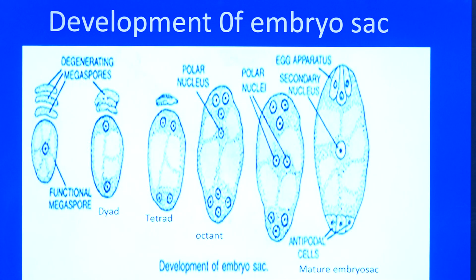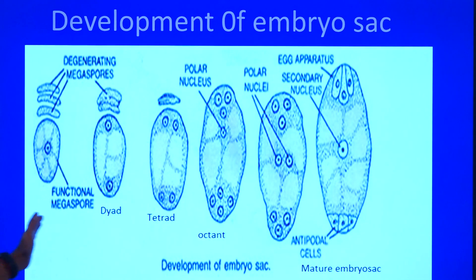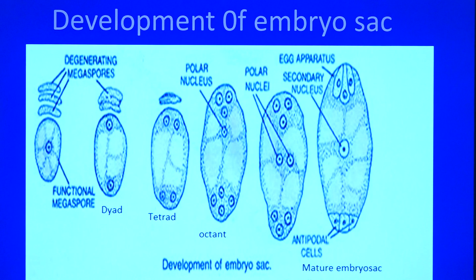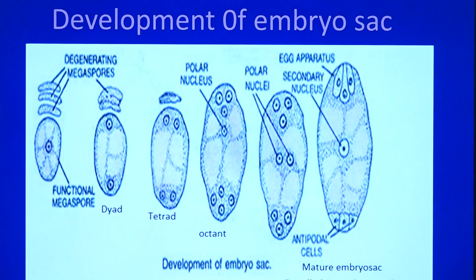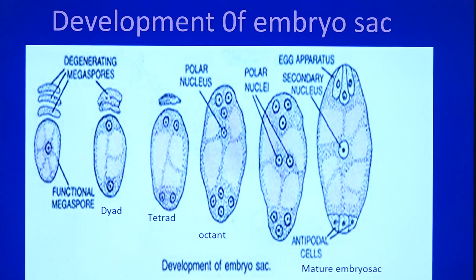The megaspore mother cell undergoes meiotic division. The megaspore mother cell is always diploid in nature. It undergoes first meiotic and second meiotic division, resulting in the formation of four megaspores. Out of four megaspores, only one is functional. The remaining three disintegrate.